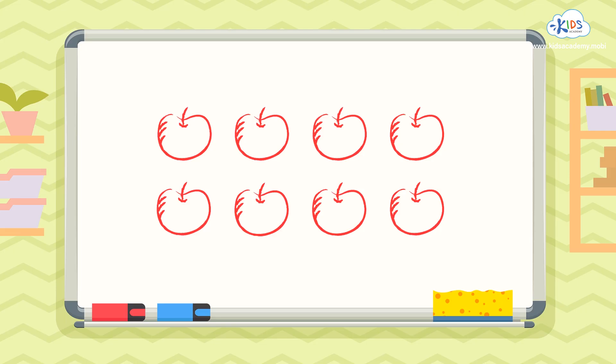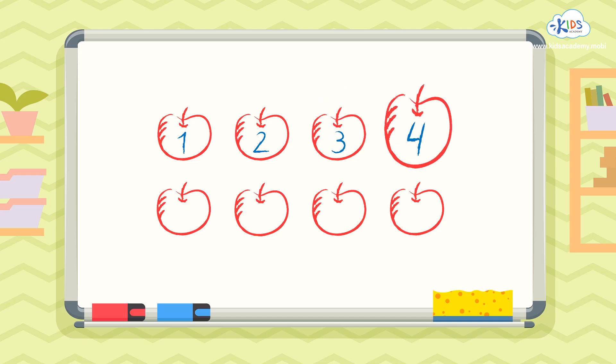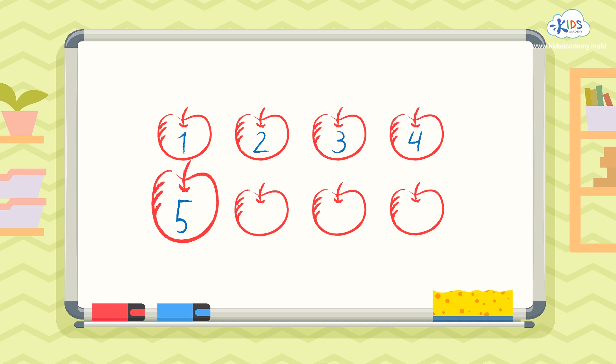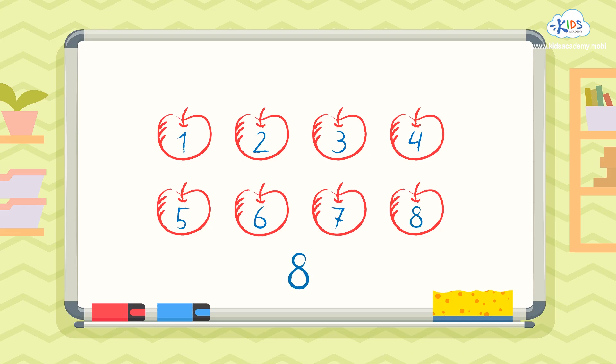Here we have a group of apples. Let's count them carefully, one at a time, to make sure you know how many there are. One, two, three, four, five, six, seven, eight. There are eight apples.